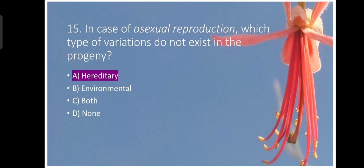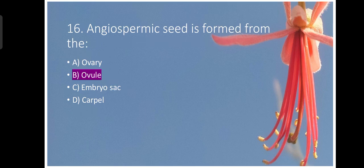In case of asexual reproduction, which type of variations does not exist in the progeny? Hereditary variations does not exist in case of asexual reproduction. Angiospermic seed is formed from the ovule. Ovule is converted into seed and the ovary is converted into fruit. So the ovule is the correct answer.